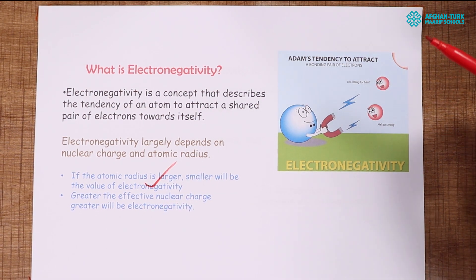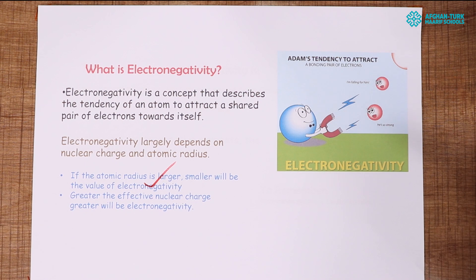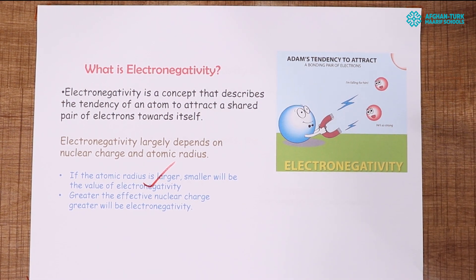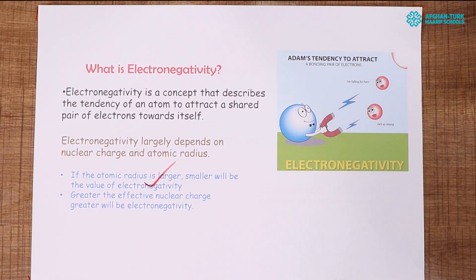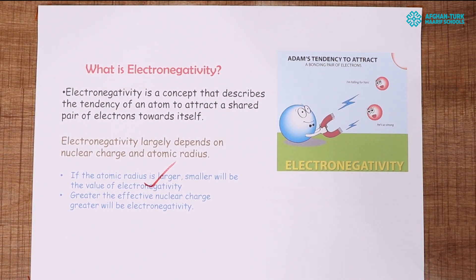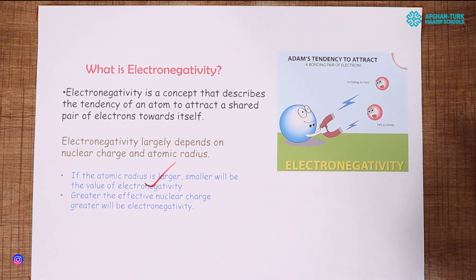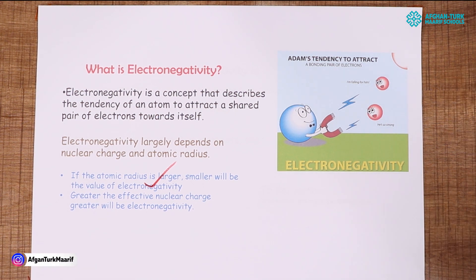If the nuclear charge is greater, the electronegativity will also be higher. If the nuclear charge is smaller, the electronegativity will also be smaller.